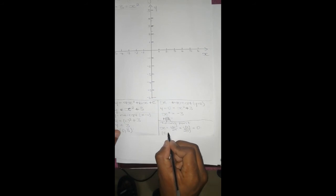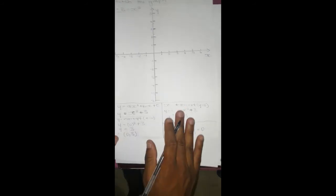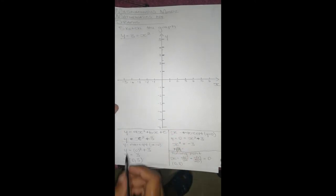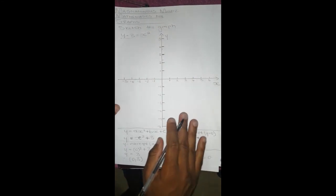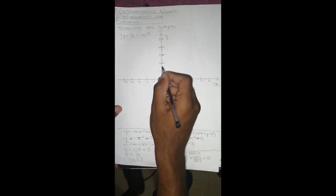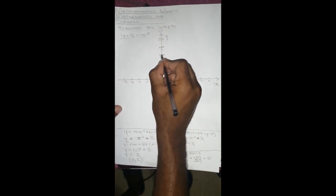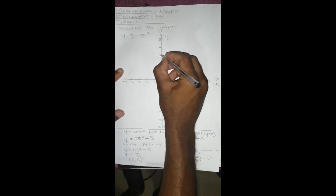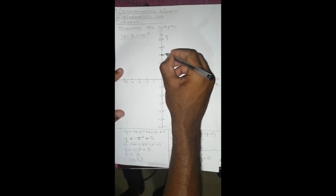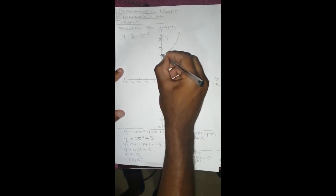We go back to the Cartesian plane and mark those points, the y-intercept and the turning point. So x is zero here and y is 3 right here. There's the turning point and the y-intercept, so our graph is going this way.